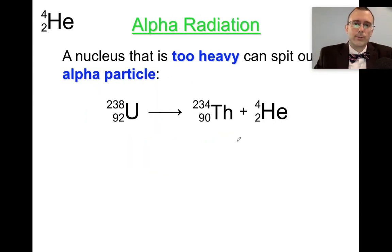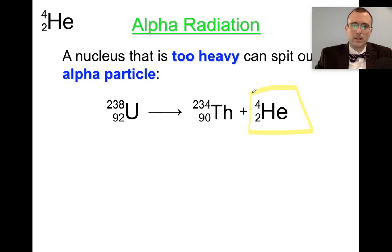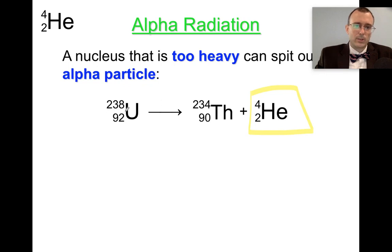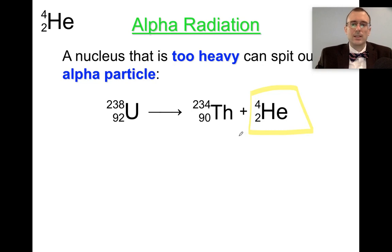Alpha radiation is essentially two protons and two neutrons, and so you write your alpha radiation as helium — He with mass number 4 and atomic number 2. Alpha radiation occurs when a nucleus is just too heavy to be stable. Uranium-238 is unstable and will split into thorium-234 and an alpha particle. In doing that, it becomes more stable because it loses some of its mass. Elements don't want to be that heavy.